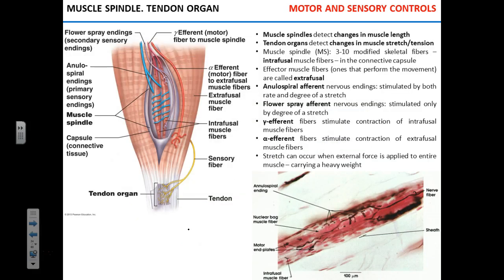To talk about one of the most important somatic reflexes — the stretch reflex — we first need to learn about the muscle spindle and tendon organ. The muscle spindle is a structure that detects and sends information about changes in muscle length, essentially detecting stretch. The tendon organ detects changes not only in stretch but also in the tension of the muscle.